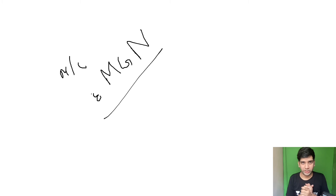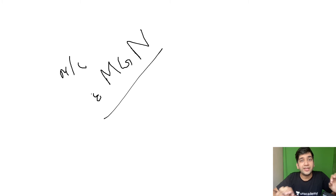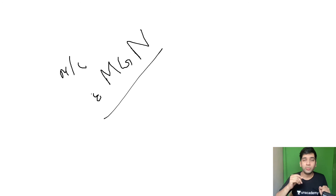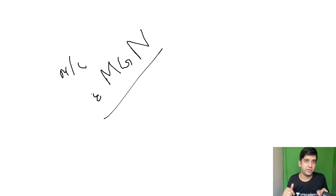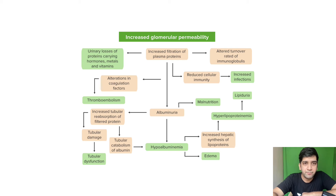Now, nephritic versus nephrotic — I'm sure you know the difference. Nephritic syndrome presents classically with hematuria, non-selective proteinuria, and hypertension. Nephrotic syndrome is a wider range of problems. All the issues in nephrotic syndrome stem from a problem in the basement membrane or capillary permeability causing increased filtration and loss of lots of proteins. The main problem is increased glomerular permeability.